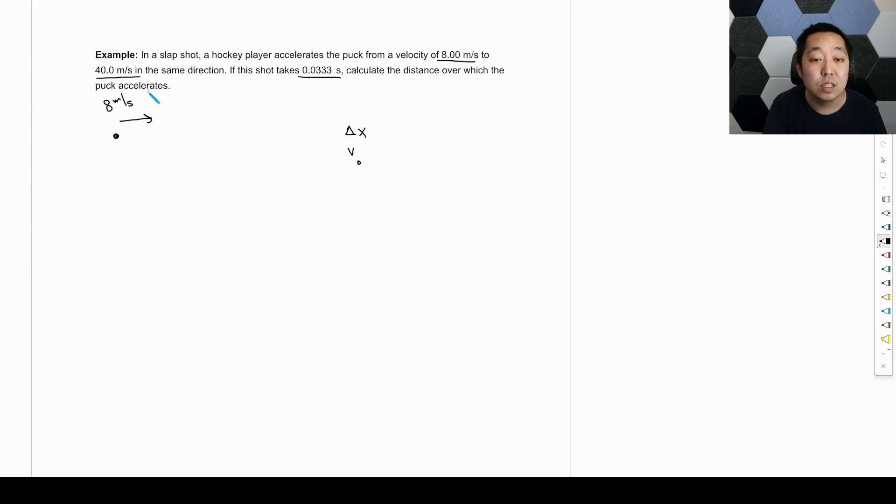It's moving at eight meters per second. We'll just say it's to the right. And then later on, it's going to go 40 meters per second. And those are velocities. If the shot, the time takes point, calculate the distance. So we want to know how far this distance is. So first let's define our positive. We'll say right is the positive direction. So the displacement here is to the right. So that's what we're looking for.